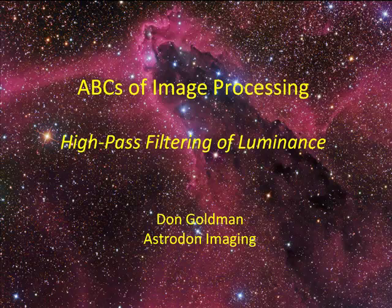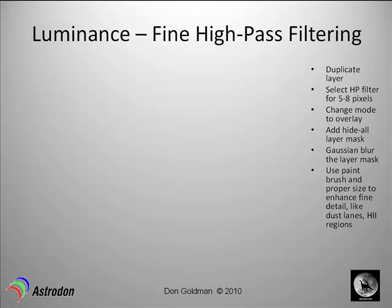This tutorial is about high pass filtering of luminance data. High pass filtering is a method to bring out detail on a very localized level — you paint in detail where you want it and leave other areas alone, such as stars. We're going to do this at two levels: a fine level for tendrils, dust lanes, and H2 regions, and a coarse level for larger structures like spiral arms to give them a 3D effect.